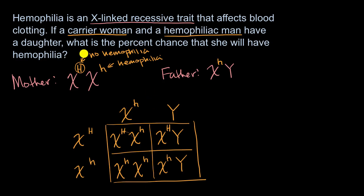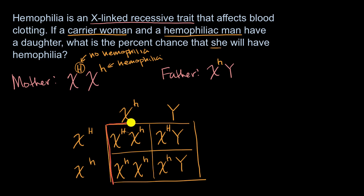Now, what is the percent chance that a daughter would have hemophilia? Which of these scenarios show a daughter? Well, the daughters are going to be the XX scenarios — these are the two scenarios in which they have a daughter. Because there's a Y chromosome in the other two, those would be them having a son.